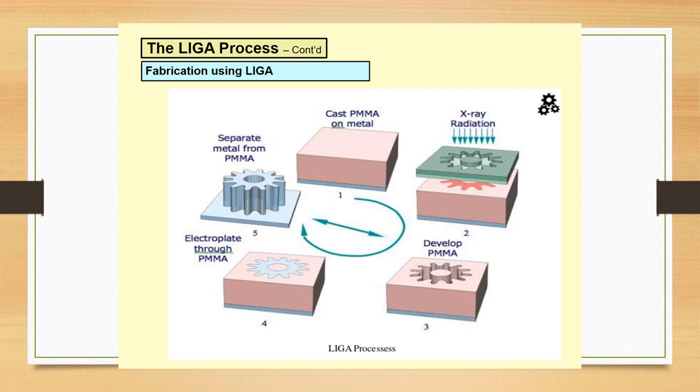Once the electroplating is done, the metal will be deposited in all the structures that are formed by the mask. In the final step, the whole PMMA has been developed and removed, so we can get a high aspect ratio metal-like structure.